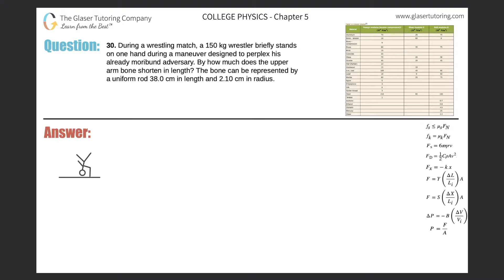Number 30. During a wrestling match, a 150 kilogram wrestler briefly stands on one hand during a maneuver designed to perplex his already moribund adversary. By how much does the upper arm bone shorten in length? The bone can be represented by a uniform rod, 38 centimeters in length, and 2.1 centimeters in radius.